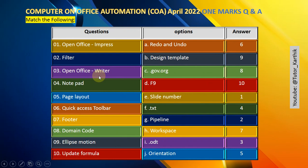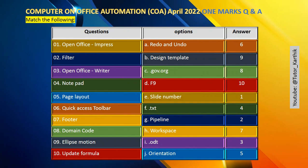Question number 3: OpenOffice Writer uses the .odt file format. So Writer documents are saved in the .odt format.